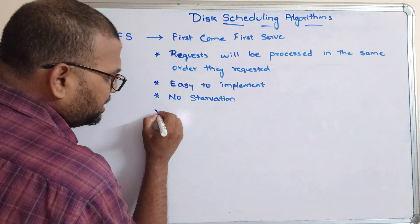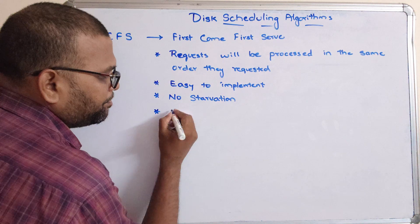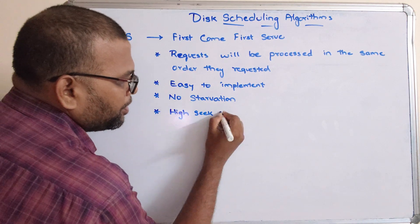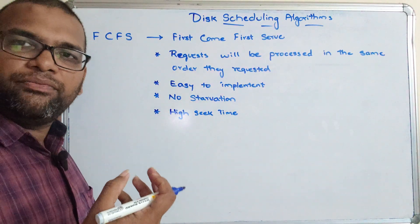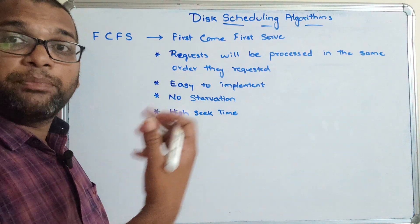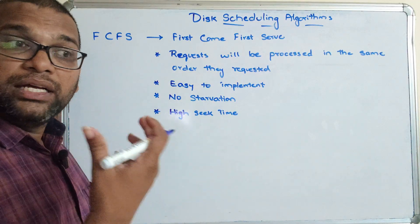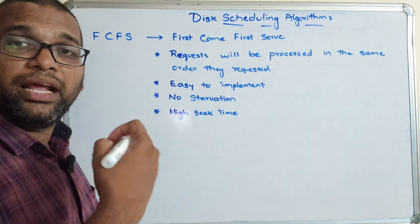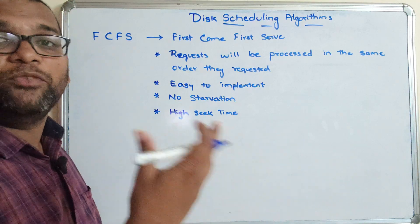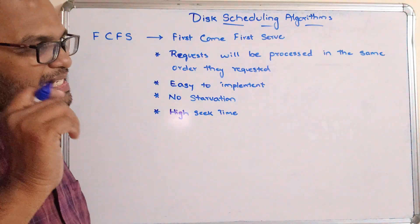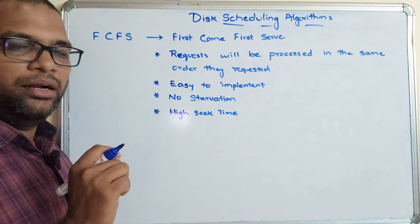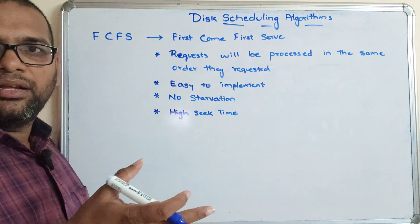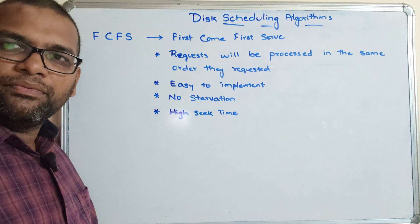The one disadvantage of FCFS is that the seek time can be more. Because the head moves based purely on request order, it may have to travel to a far position, making the seek time larger. Let's see an example of how FCFS processes requests.